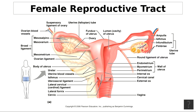The ovaries are suspended by several ligaments — you can see the broad ligament here, which is a serous membrane that suspends them. They produce haploid ova by oogenesis, just like males produce haploid sperm. That's meiosis — females produce their eggs by meiosis, and that process is called oogenesis.